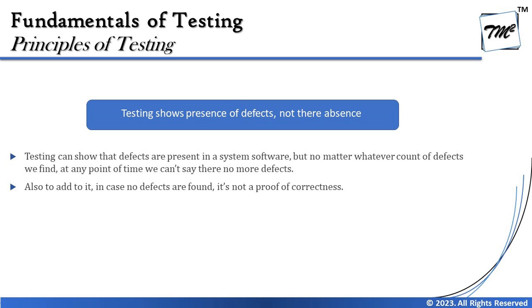The very first principle is: testing shows presence of defects but not their absence. This simply means testing is a process that does not assure you that you can find all possible defects in the system. No matter whether you have found defects or not, testing is not an assurance that you have a defect-free product. Testing can help find defects, but it does not guarantee you've found all of them, because testing is an endless journey.